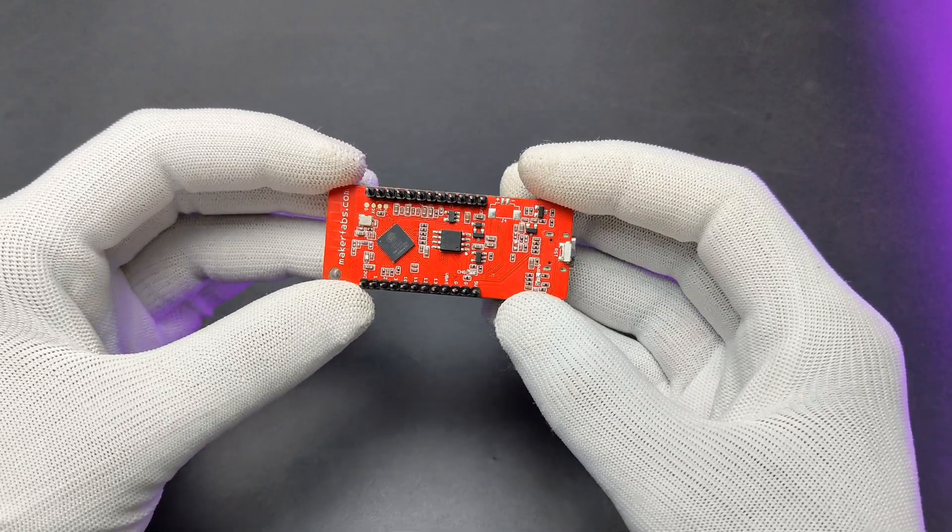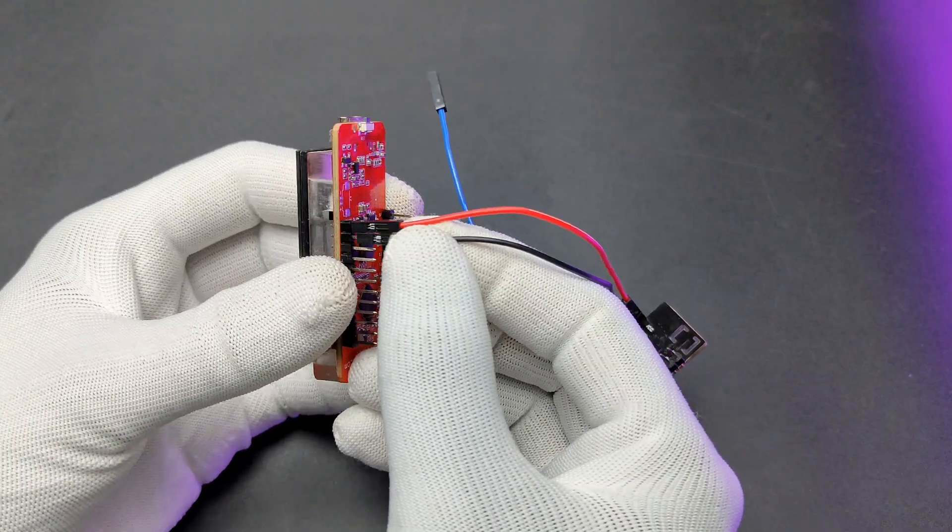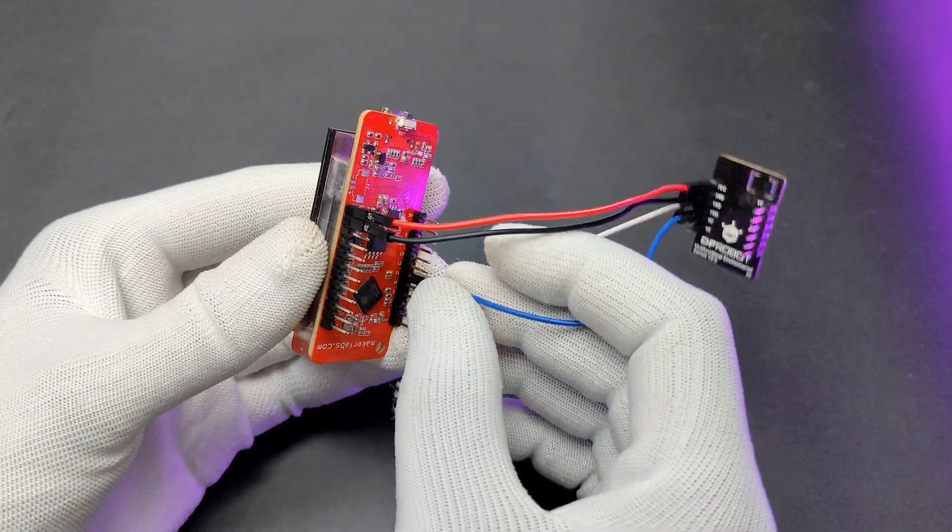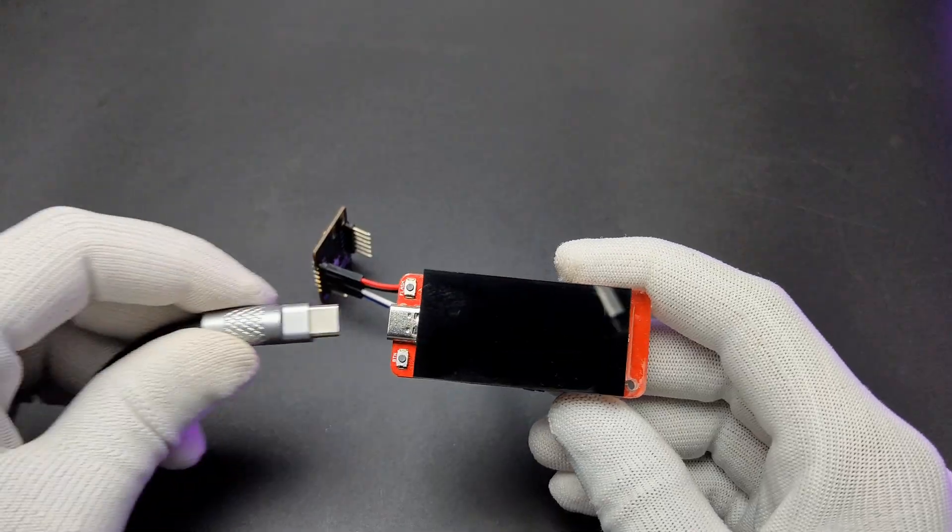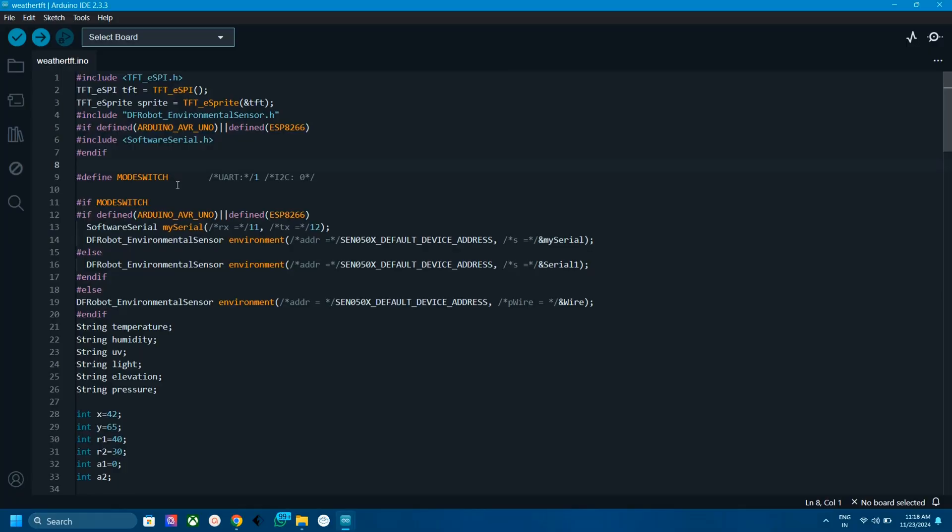Now I connected the sensor to this MakerForce 1.9 inch ESP32 display. I made this code by modifying the example code. After uploading, we can see the beautiful interface.